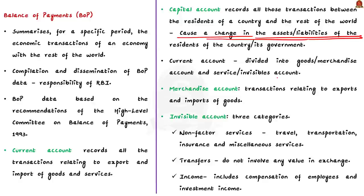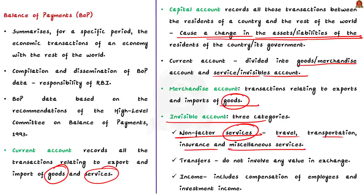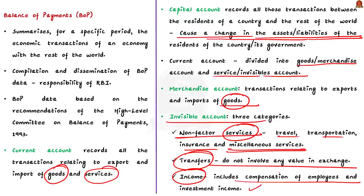The current account is further subdivided into goods or merchandise account and services or invisibles account. The merchandise account consists of transactions relating to exports and imports of goods. The invisibles account has three broad categories: first, non-factor services like travel, transportation, insurance and miscellaneous services; then transfers, which do not involve any value in exchange; and thirdly, income, which includes compensation of employees and investment income.